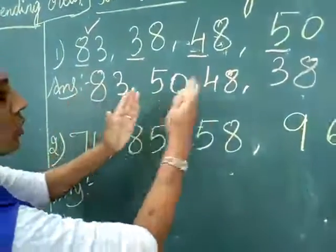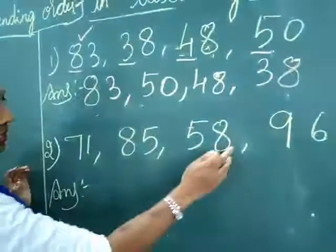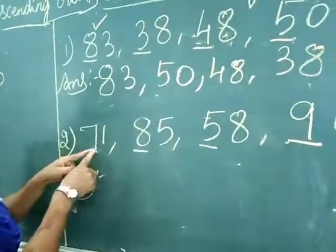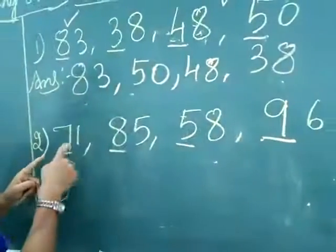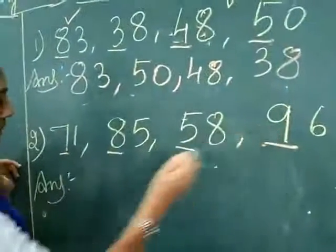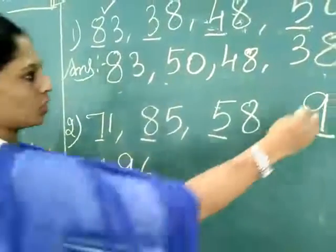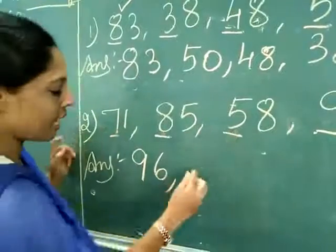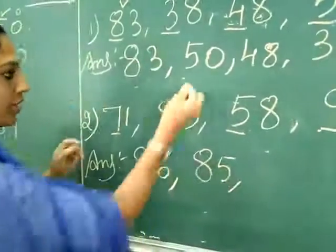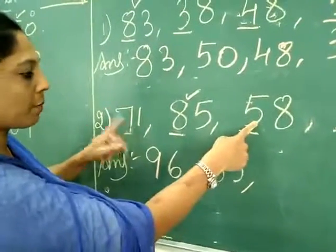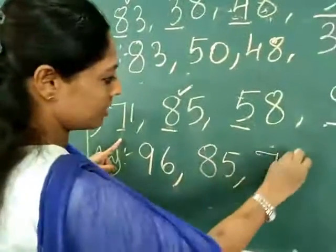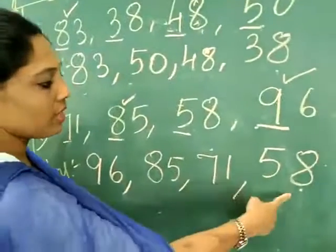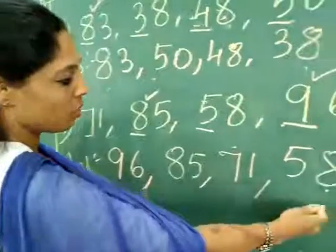Descending order: biggest to the smallest. Second example with two-digit numbers — all tens digits are different, so compare the tens place: seven, eight, five, nine. Nine is the biggest, so ninety-six comes first. Then eight is next, write eighty-five. Then seven, write seventy-one. Last is fifty-eight. Ninety-six, eighty-five, seventy-one, fifty-eight. Descending order: biggest to the smallest number.